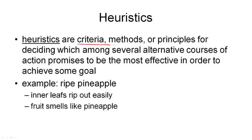So heuristics are criteria, methods, or principles for deciding which among several alternative courses of action promises to be the most effective. The alternatives that we're looking at are of course the successor nodes that we want to evaluate. We want to see which one of those is the most promising.